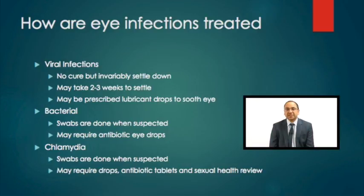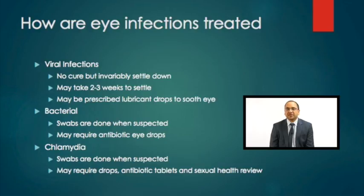This slide illustrates the treatments for conjunctivitis. Viral conjunctivitis, which is the most common, tends to settle by itself, though it has a variable course and can typically take a few weeks to settle fully. As with viruses that affect any other part of the body, there is no cure for viral conjunctivitis, but the body is very good at mounting a response against the virus and the condition tends to settle down with the body's natural defences.